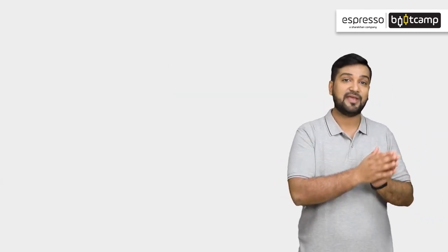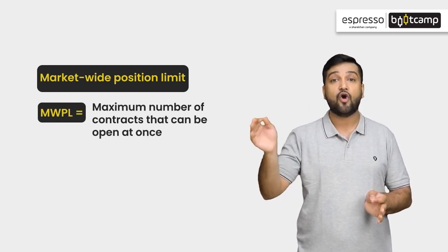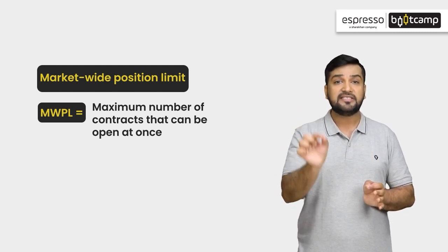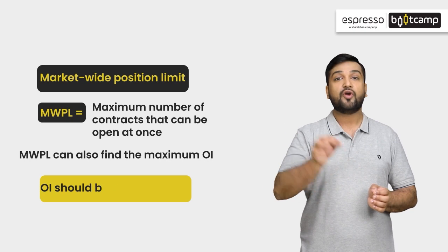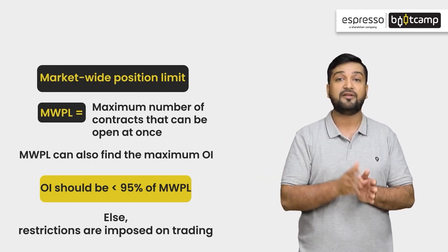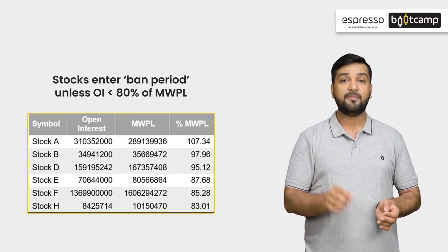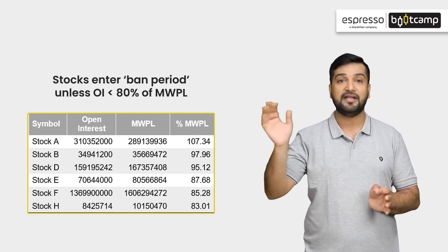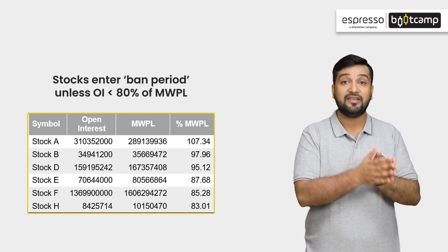Now we have a new concept which we call market-wide position limit, or MWPL. MWPL reflects how many options or futures contracts can be open. During that time, stocks are said to be in the ban period. For example, in this table you can see some stocks' open interest and MWPL data. We can see that stocks A, B, C, and D can enter into the F&O ban list as MWPL is more than 85% of the open interest.